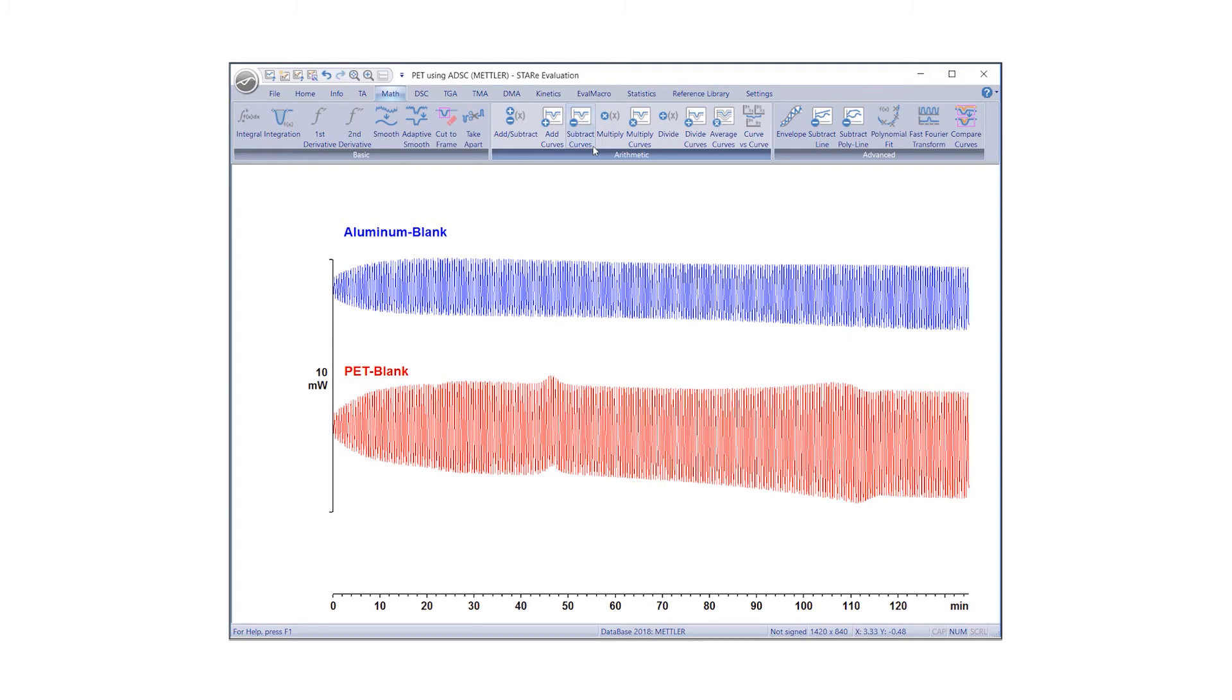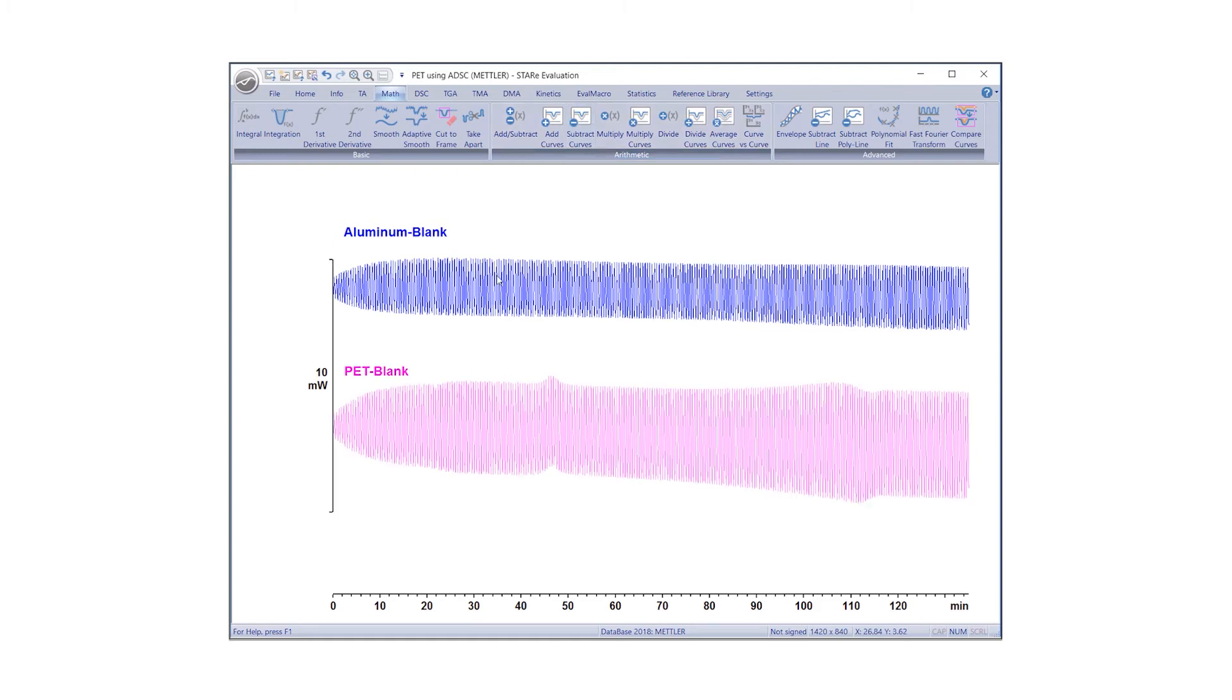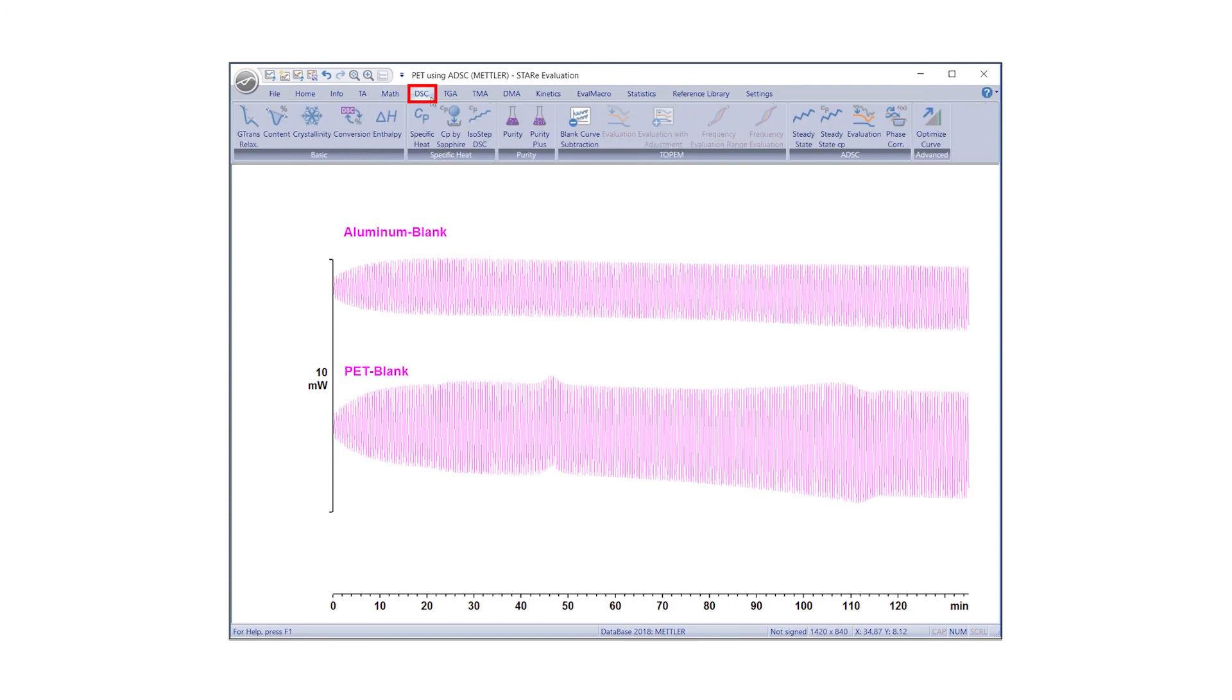Step 3, calculate the heat capacity, phase angle and reversing, non-reversing, and total heat flow curves. First, select both blank corrected curves. Then, under the DSC tab, select Evaluation for ADSC. Set the Calculation Depth and Reduction Factor to 1. The Reduction Factor is the reducing number of measuring points for the ADSC evaluation. A period of 60 seconds is chosen based on the method's loop period.